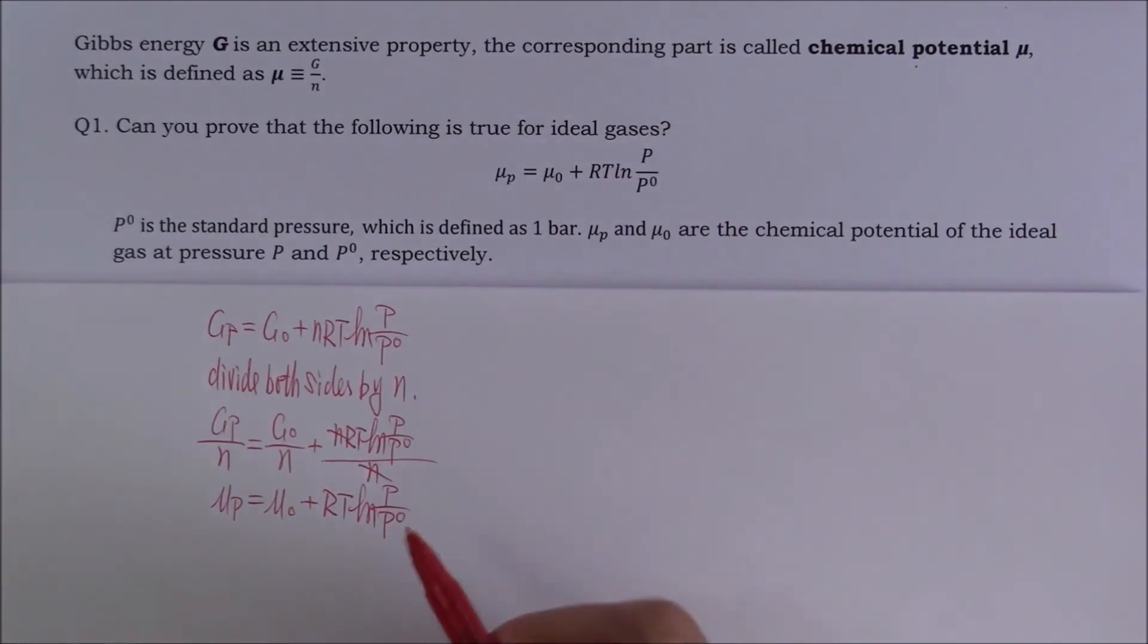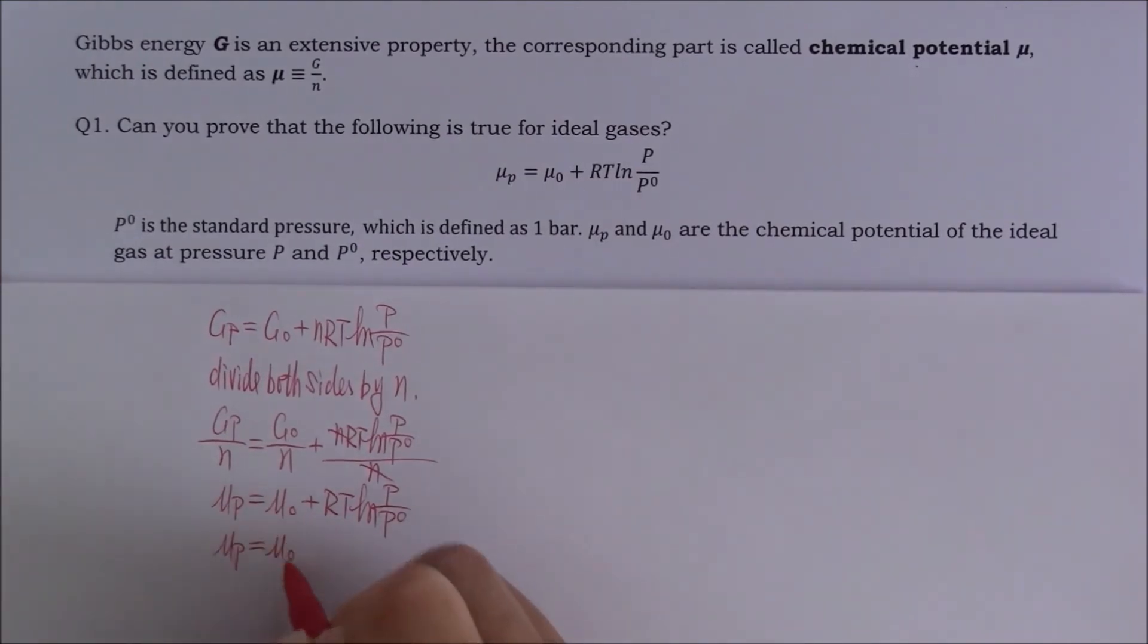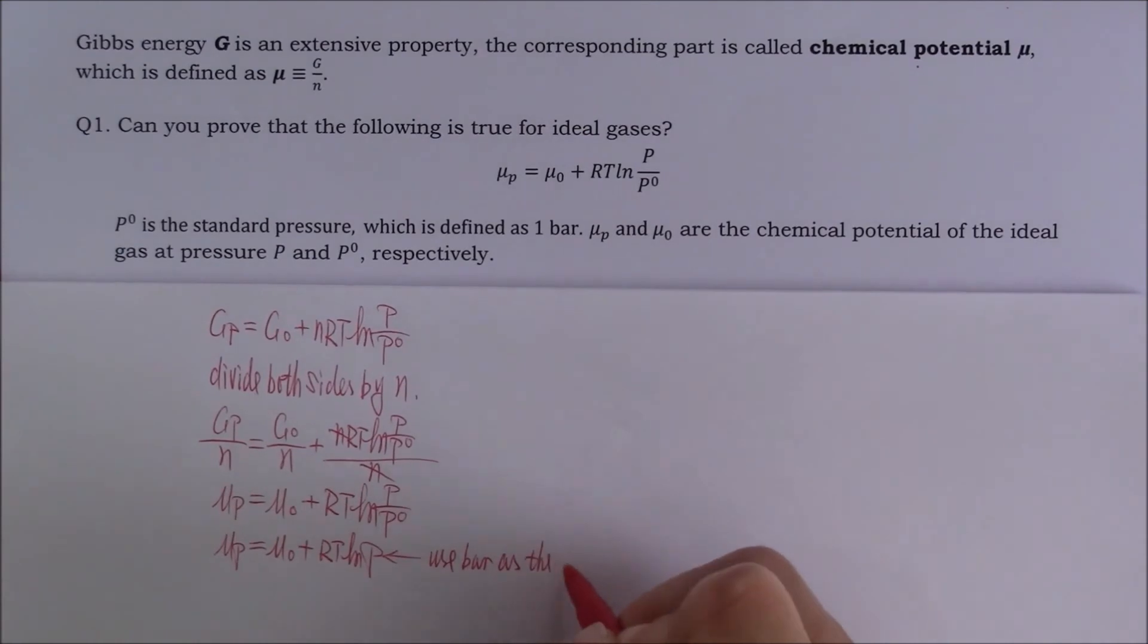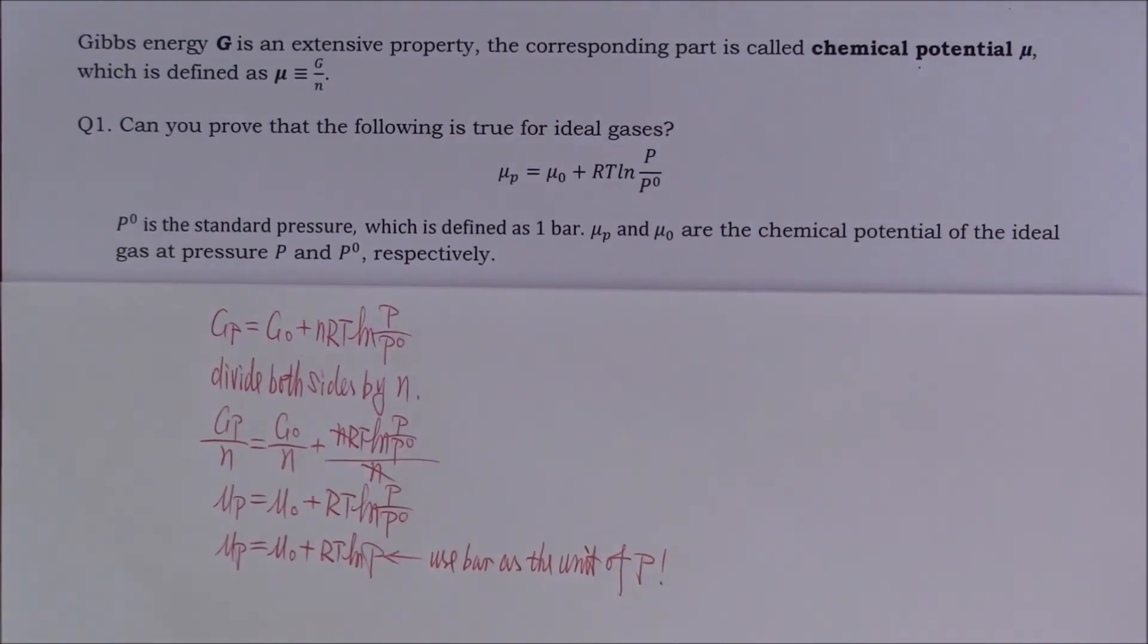As we know, P0 is one bar. If we use bar as a unit of P, then the bottom will be one. This equation will look much simpler. So let's do it. Make sure you understand if you want to use this equation, the unit of P must be bar or atmospheric pressure because one bar is almost equal to one atmospheric pressure.